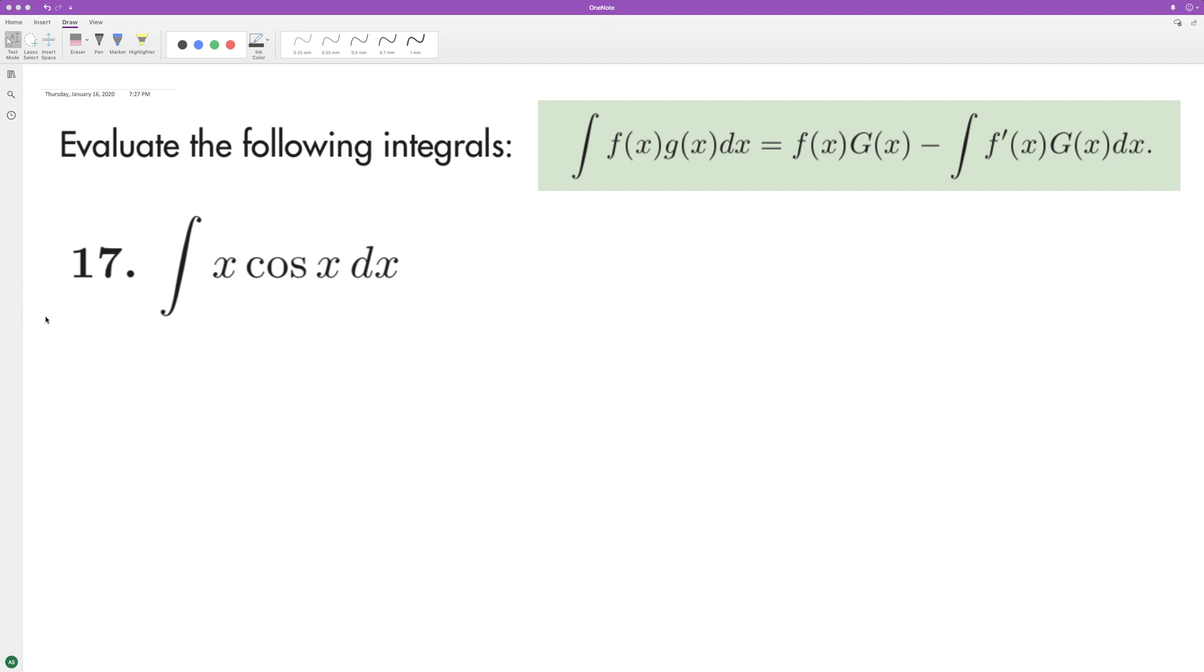Following integration by parts, we'll set f of x equal to x times cosine x. We'll set f of x equal to x, and then we'll set g of x equal to cosine of x.